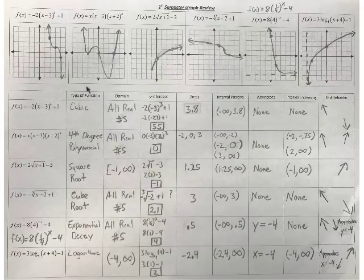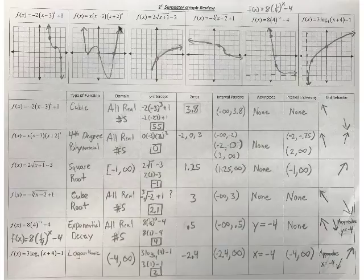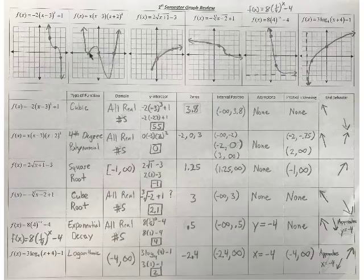The next one, this polynomial, is 4th degree. Domain is all real numbers — there's nothing I cannot plug in. To find the y-intercept, I plug in 0 to all those x's and I get 0. My zeros are the ones we looked at earlier: negative 2, 0, and 3. My interval positive: it's positive all the way to the first zero, then from the next interval to the next, and then from there on — three separate intervals, since negative 2 is neither positive nor negative. No asymptotes. Interval increasing: it looks like it's increasing from negative infinity to about negative 0.75, and also from the minimum at about x equals 2 to infinity. End behavior: it's going up on both sides.